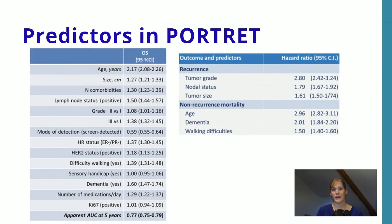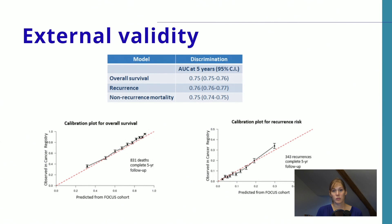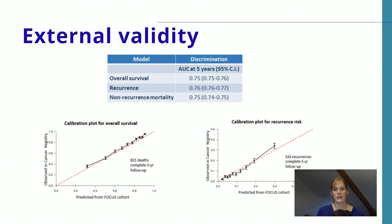The main predictors used in the PORTRAIT tool include many recognized from PREDICT, but importantly we also included comorbidities, difficulties in walking (functional impairments), sensory handicaps, dementia — which was a very strong predictor of competing mortality — and polypharmacy. The tool was externally validated in a very large cohort, with areas under the curve around 0.75 for all outcomes. The calibration plots show that the lines almost overlap the ideal line, indicating good calibration. We concluded that this tool performs well in the external validation set and can therefore be used in daily clinical practice.